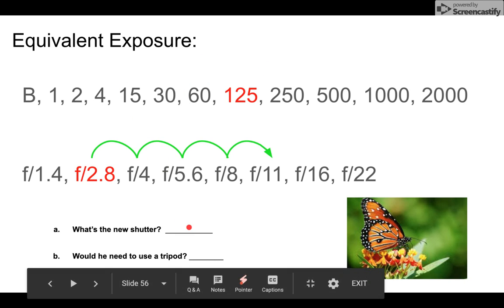So the correct answer would be 1/4 of a second is the new shutter speed, and yes, of course he would need to use a tripod because 1/4 of a second is less than 1/60th of a second, which is the slowest we can handhold our camera.